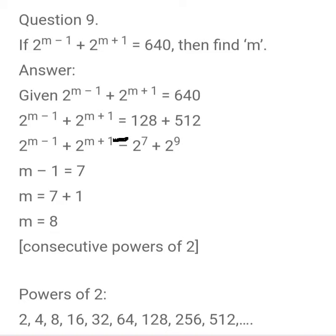So 128 equals 2 power 7 and 512 equals 2 power 9. Hence, 2 power m minus 1 plus 2 power m plus 1 equals 2 power 7 plus 2 power 9.